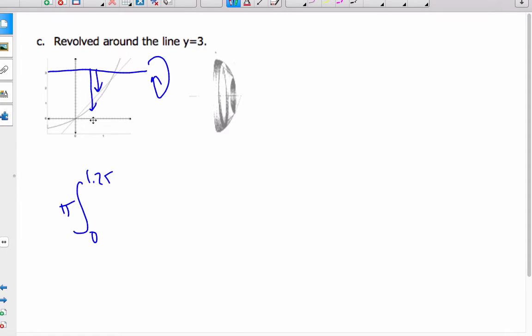My outside radius now is going to be this distance here. Now, if I think about it, this is 3. This value here is e to the 2 minus x. So the whole distance is 3 minus that gives me this. So it's 3 minus e to the x minus 1 squared. That's this blue radius here.